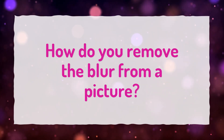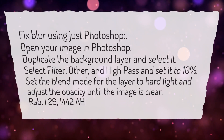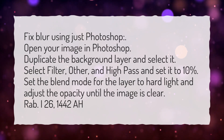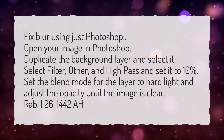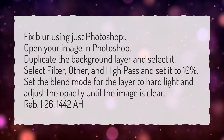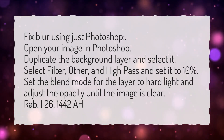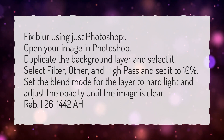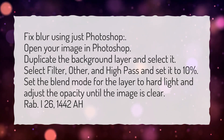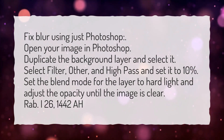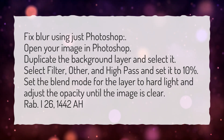How do you remove the blur from a picture? Fix blur using just Photoshop. Open your image in Photoshop. Duplicate the background layer and select it. Select Filter, Other, and High Pass and set it to 10%. Set the blend mode for the layer to Hard Light and adjust the opacity until the image is clear.